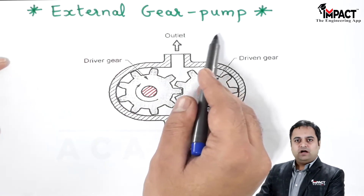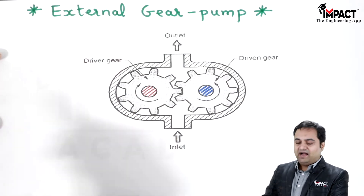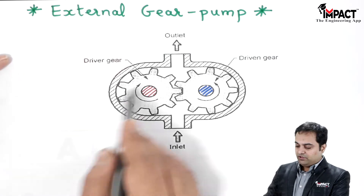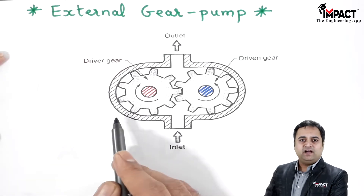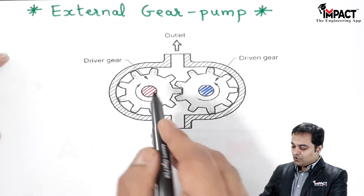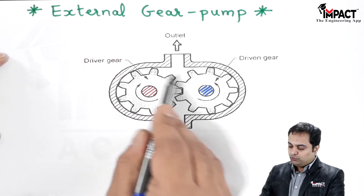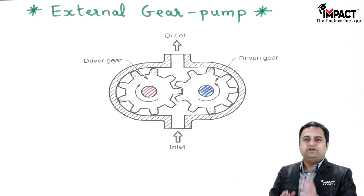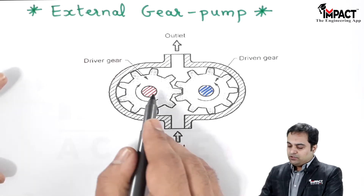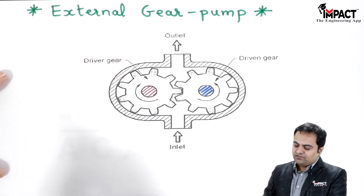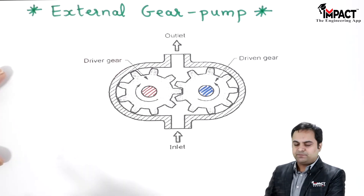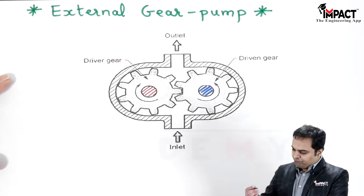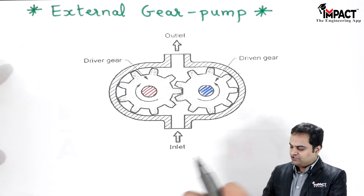Gear pumps are high-speed operation machines, meaning the gear pump operates at a very high speed. Therefore it would be directly coupled with the motor — there is no need for a reduction gearbox in between.